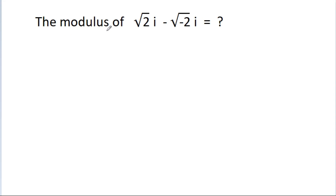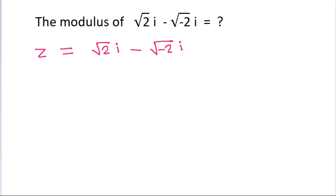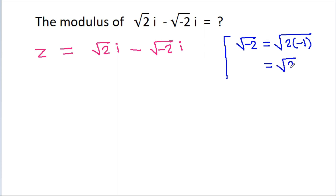We have to find the modulus of √(2i) - √(-2i). Suppose g is equal to √(2i) - √(-2i). Now, √(-2) is equal to √2 times √(-1), which is √2 times iota.